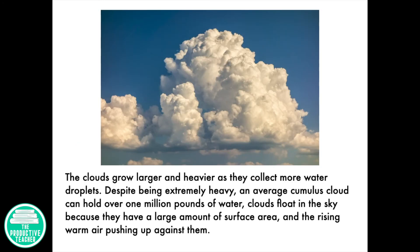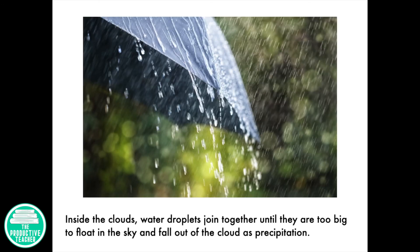The clouds grow larger and heavier as they collect more water droplets. Despite being extremely heavy, an average cumulus cloud can hold over 1 million pounds of water. Clouds float in the sky because they have a large amount of surface area and the rising warm air pushing up against them. Inside the clouds, water droplets join together until they are too big to float in the sky and fall out of the cloud as precipitation.